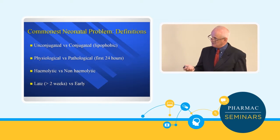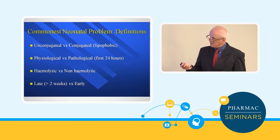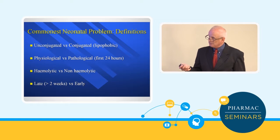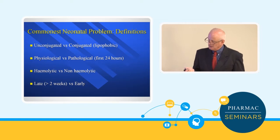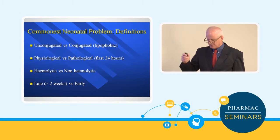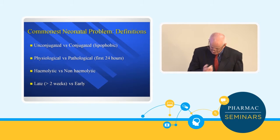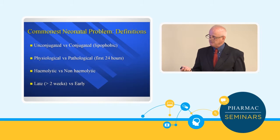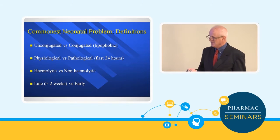Physiological versus pathological: by definition, any jaundice that's clinically apparent in the first 24 hours is pathological. Any jaundice which appears after 24 hours can either be physiological or pathological.